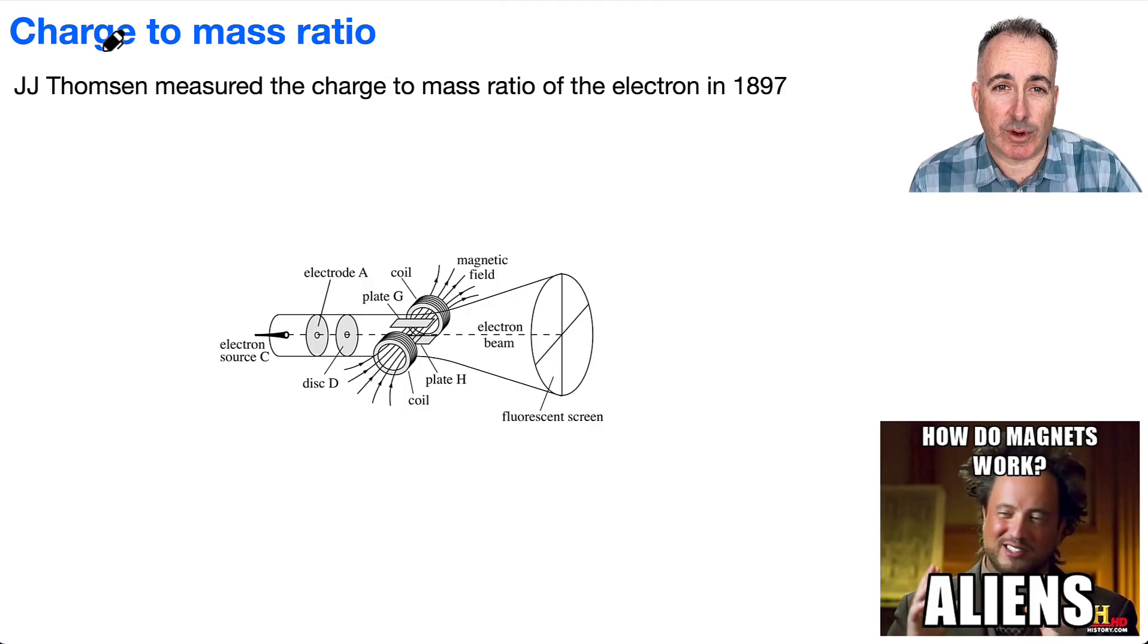All right, so we've got charge-to-mass ratio. This is an experiment that J.J. Thomson did where he measured the charge-to-mass ratio. What does that mean? Charge is Q, mass is M, so the charge-to-mass ratio is Q over M. He figured that out for the electron in 1897.